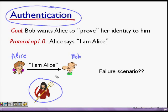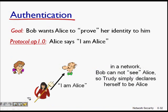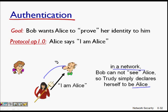The first protocol is very simple: Alice just declares 'I'm Alice' over a channel. The failure scenario is that a bad guy — a man in the middle — can also say 'I'm Alice' and talk to Bob while faking being Alice, then reveal all the secrets. In a network, Bob cannot see Alice, so Trudy simply declares herself to be Alice and Bob reveals everything. This is not secure.